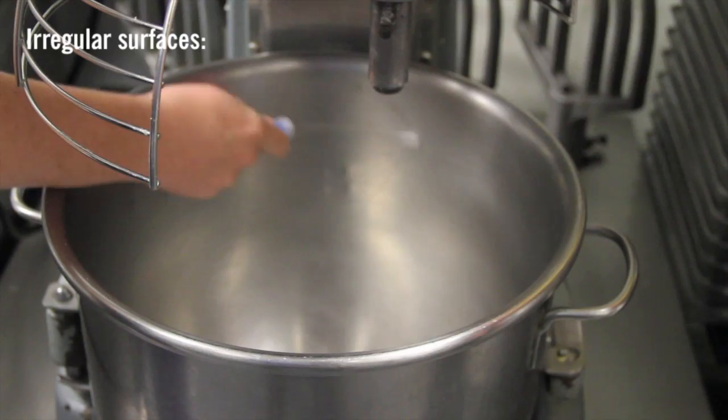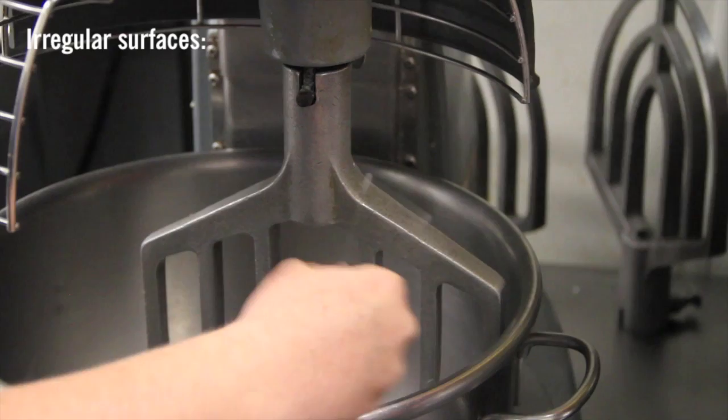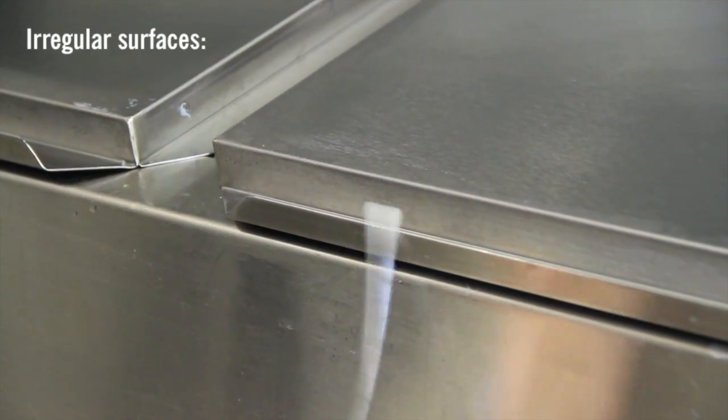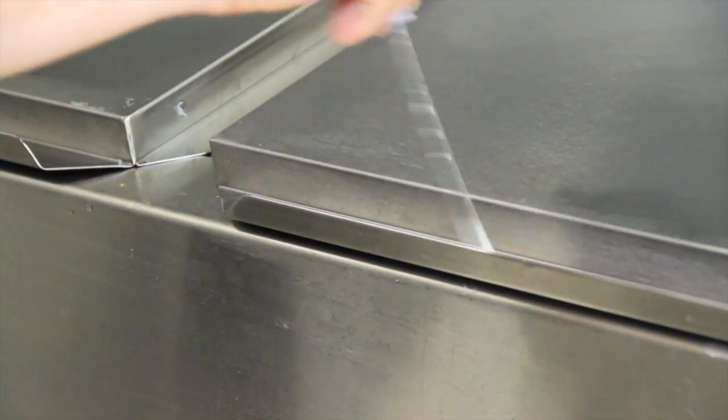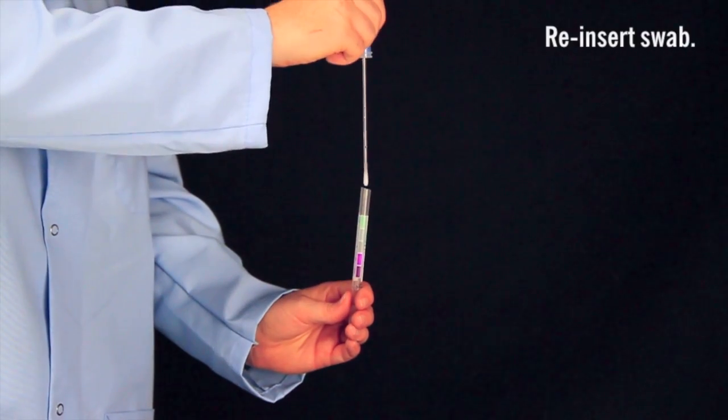When swabbing an irregular surface, ensure the swabbing technique remains consistent and swab a large enough area to collect a representative sample. Replace the swab in the tube.